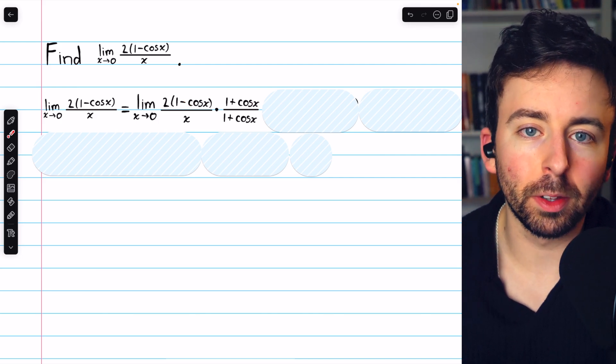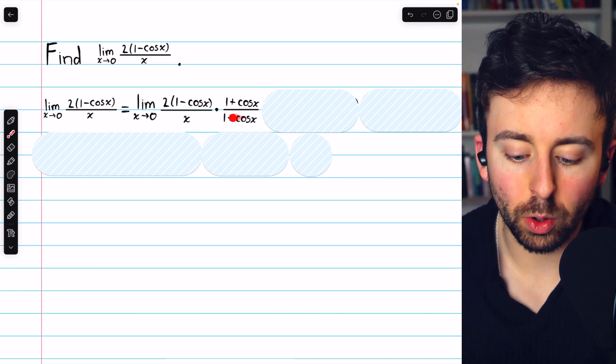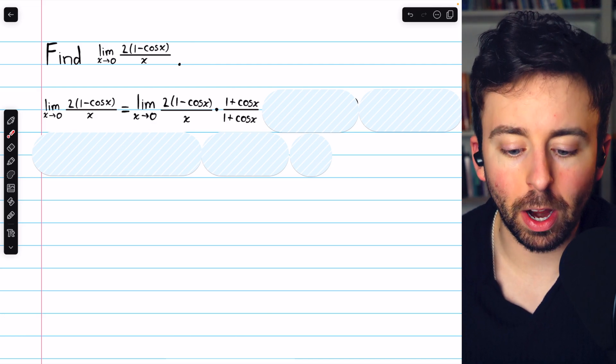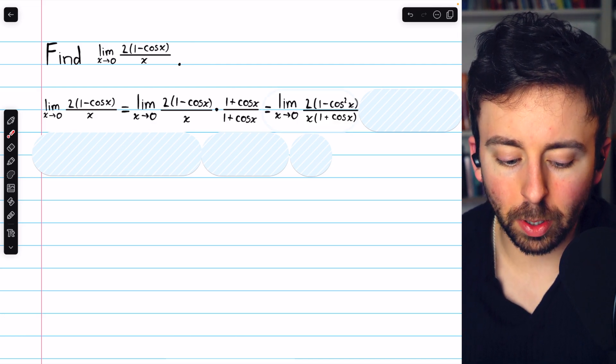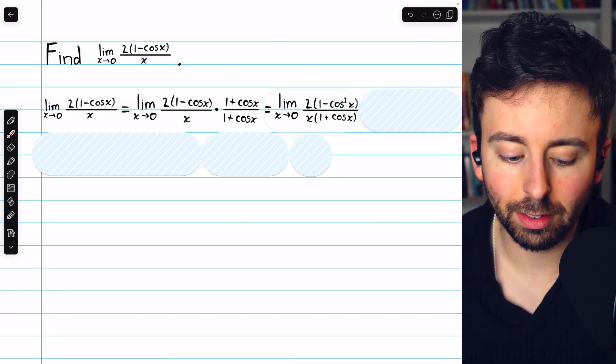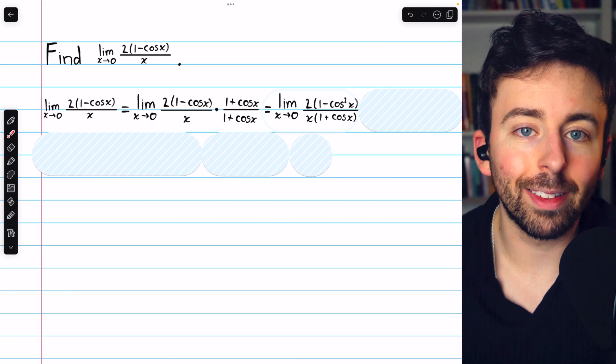And of course, we can't just multiply by that in the numerator. We have to do it in the denominator too, so that we're not changing the value of the expression. Now in the numerator, what's going to happen is we get 1 minus cosine x times 1 plus cosine x. Hopefully, you know how the conjugate works.